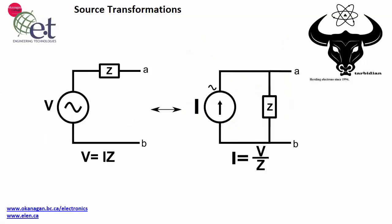Welcome to the electronics channel. In this video I want to talk about source transformations, which are basically versions of Thevenin's theorem or Norton's theorem. These source transformations allow conversion from a voltage source with a series impedance into a current source with a parallel impedance, and vice versa.